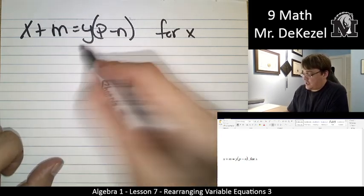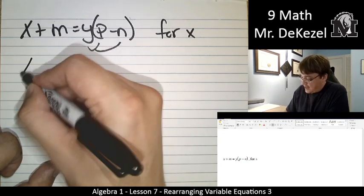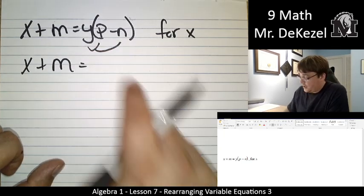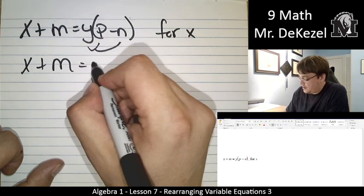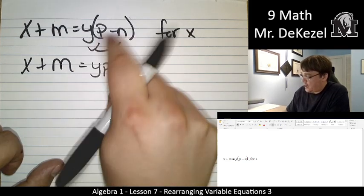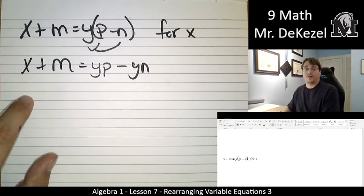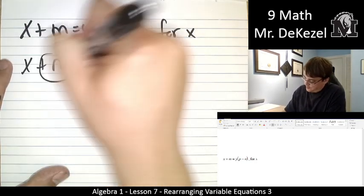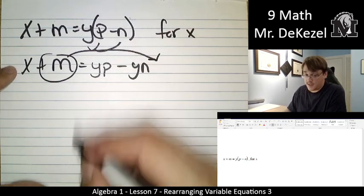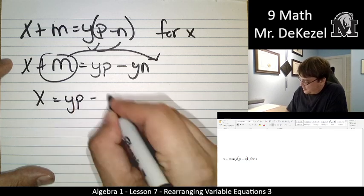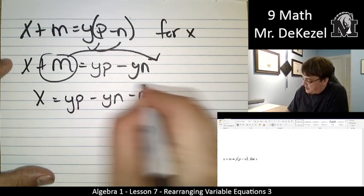So let's get rid of that. We use the distributive property. So x plus m stays by itself on that side for now. y times p is yp. And y times minus n is minus yn. We're then going to go ahead and move the positive m over. It's negative on the other side then. So that's x equals yp minus yn minus m.